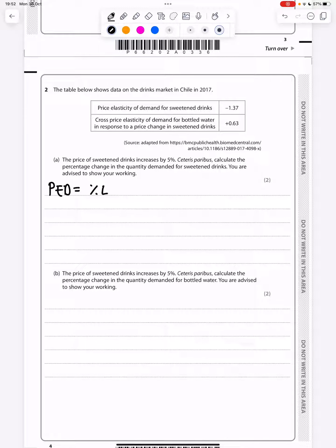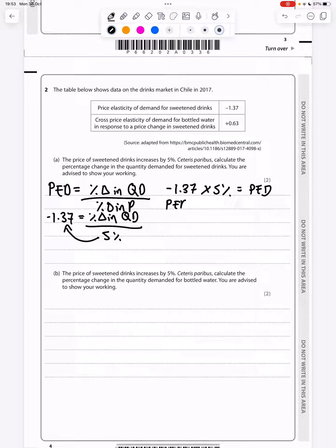We put in our formula: percentage change in quantity demanded divided by the percentage change in price. We know the PED for sweetened drinks is minus 1.37, equals percentage change in quantity demanded divided by 5%. Rearranging: minus 1.37 times 5% equals the PED. If I put that in my calculator, I get minus 6.85%.